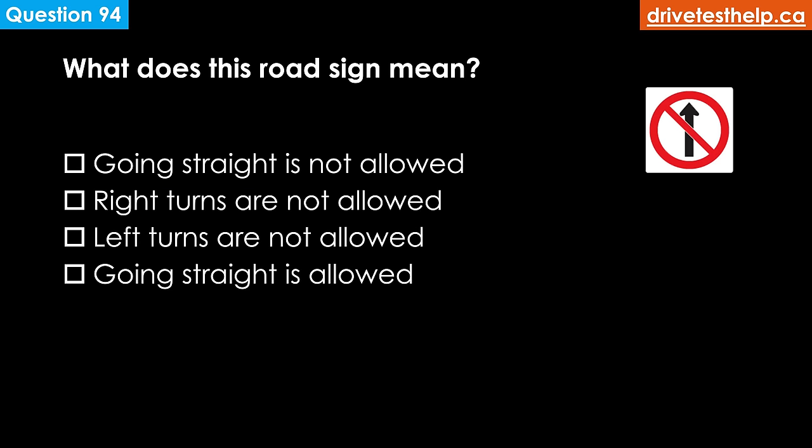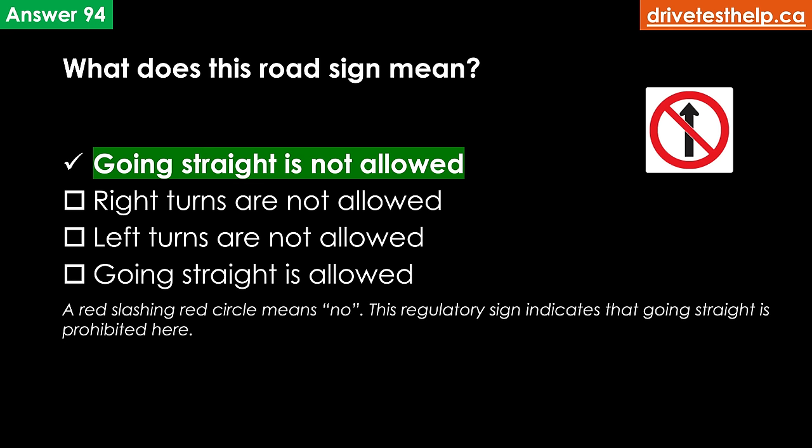What does this road sign mean? Options: going straight is not allowed; right turns are not allowed; left turns are not allowed; going straight is allowed. The correct answer is going straight is not allowed. A red slash inside a red circle means no — this regulatory sign indicates that going straight is prohibited here.